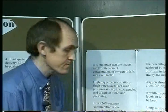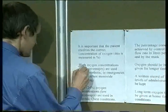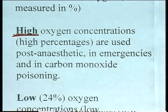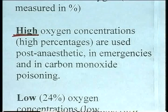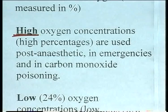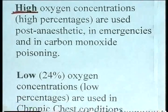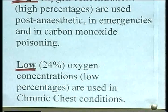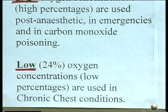Let's think about when to give high versus low concentrations of oxygen. High concentrations are used sometimes after anaesthesia, and certainly in emergency situations whenever there's interference with airway, breathing, or circulation. Another example is carbon monoxide poisoning, where high concentrations are used. For lower concentrations, 24% oxygen — only an additional 4% over atmospheric air — is given in chronic chest conditions. If someone has a chronic chest condition, we give them low concentrations of oxygen.